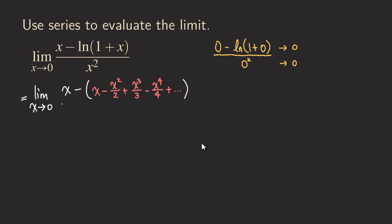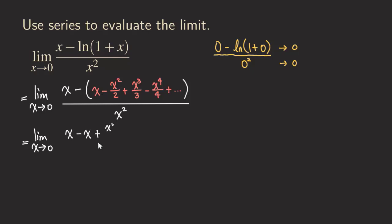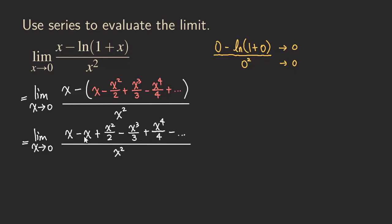The denominator is simply x², so we leave it as x². Next, we distribute the minus sign to all the terms in the series. So we get x minus x, and then minus minus gives us plus x²/2, minus x³/3, plus x⁴/4, and minus so on. The denominator remains x².